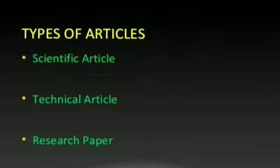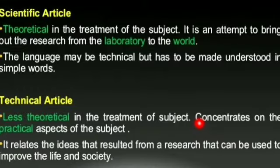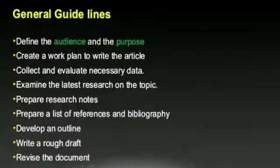Now let's talk about types of articles: scientific article, technical article, and research paper. A scientific article is theoretical in its treatment of the subject. It is an attempt to bring research from the laboratory to the world, and the language may be technical but must be made understandable in simple words. A technical article is less theoretical and concentrates on the practical aspects of the subject. It relates the ideas and results from research that can be used to improve life and society.